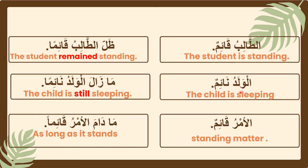Next: الولدُ نائمٌ — الولدُ is مُبْتَدَأ and نائمٌ is خَبَر. When كان وأخواتها enter the sentence it changes from مُبْتَدَأ to إسمُ مَا زَالَ. The full sentence becomes: مَا زَالَ الولدُ نائمًا. The last example is الأمرُ قائمٌ — الأمرُ is مُبْتَدَأ and قائمٌ is خَبَر. When مَادَامَ enters the sentence, الأمرُ changes to إسمُ مَادَامَ and قائمًا changes to خَبَرُ مَادَامَ.